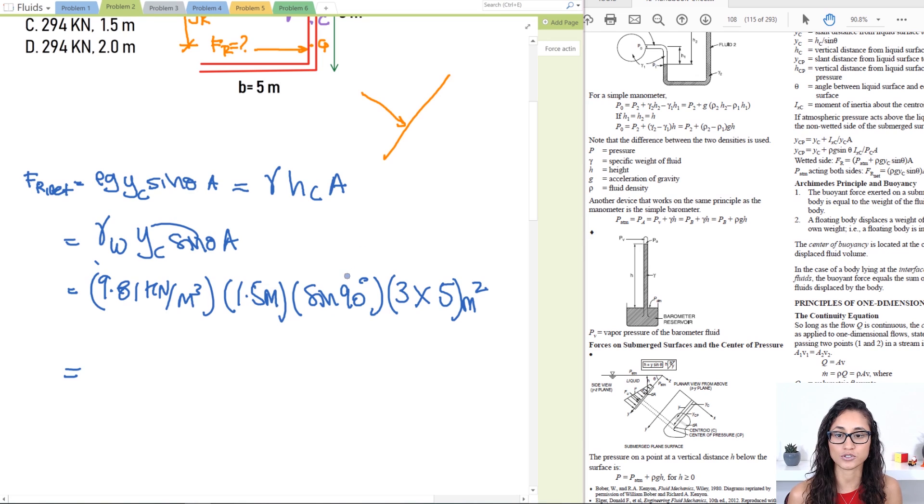Now note here guys the units add up. So we have meters squared times meters, as meter cubed cancels with this meter cubed and you're left with kilonewtons. So if you plug in this, you should get an answer of 220.7 kilonewtons.